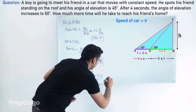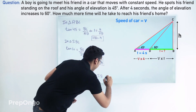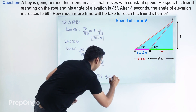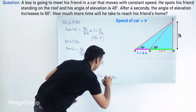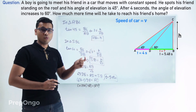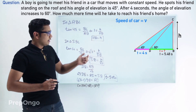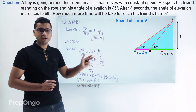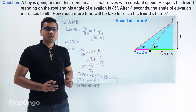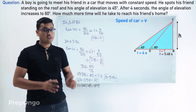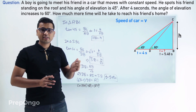So the value of T comes out to be approximately 5.48 seconds. He will take 5.48 more seconds to reach point B from point D.